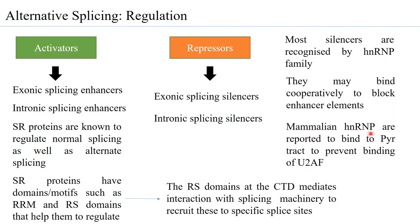Mammalian HNRNP1 is reported to bind to the pyrimidine tract, which then prevents binding of U2AF, one of the proteins of the splicing machinery.